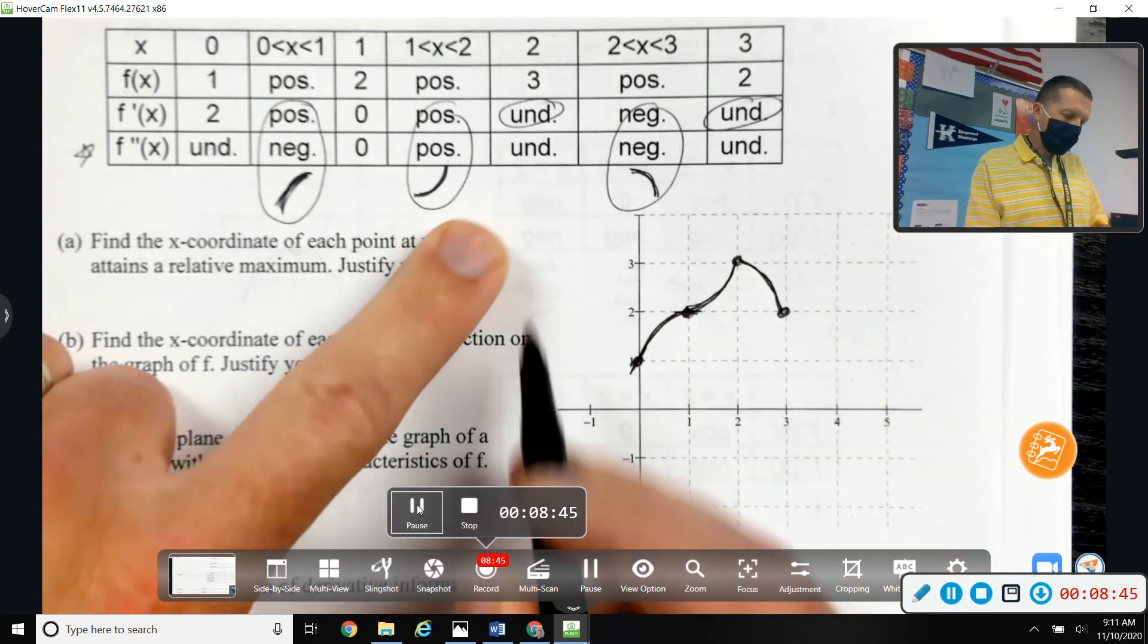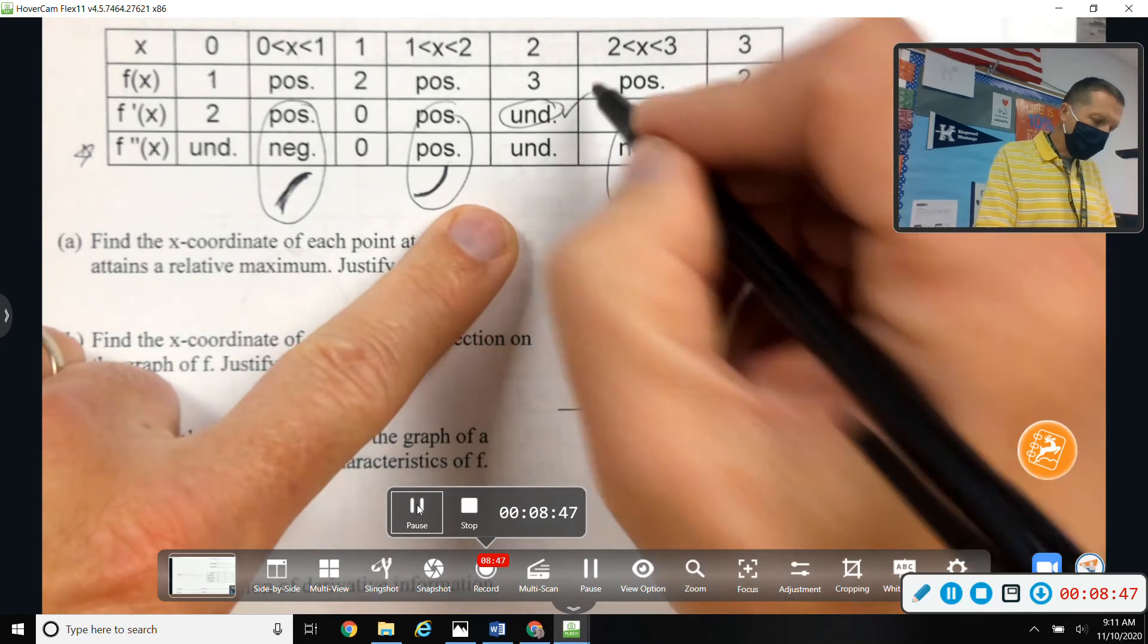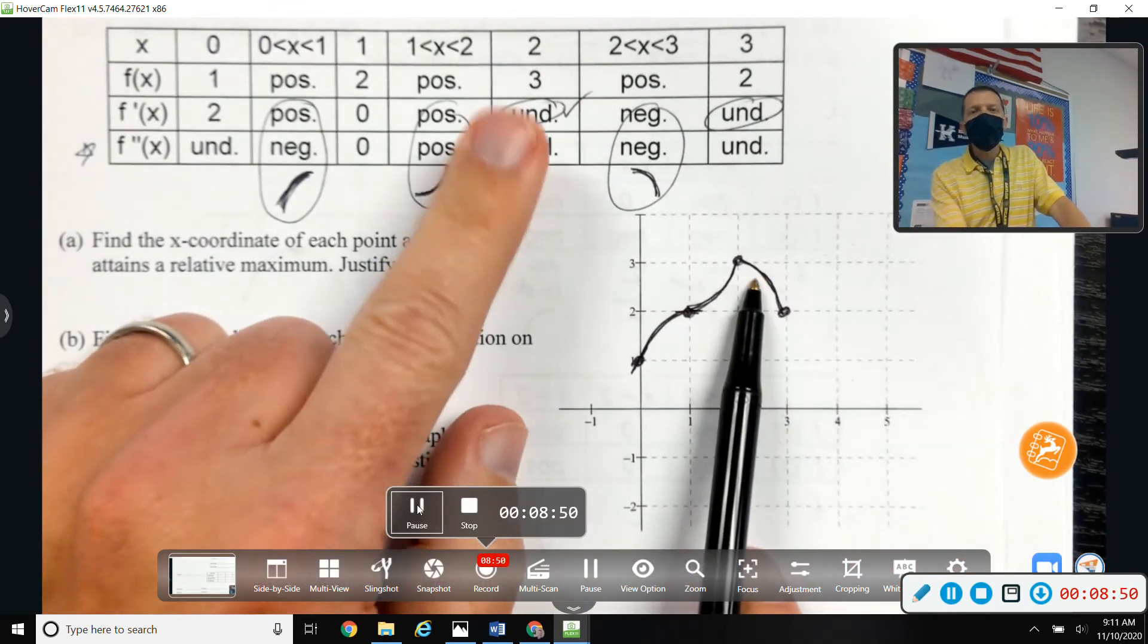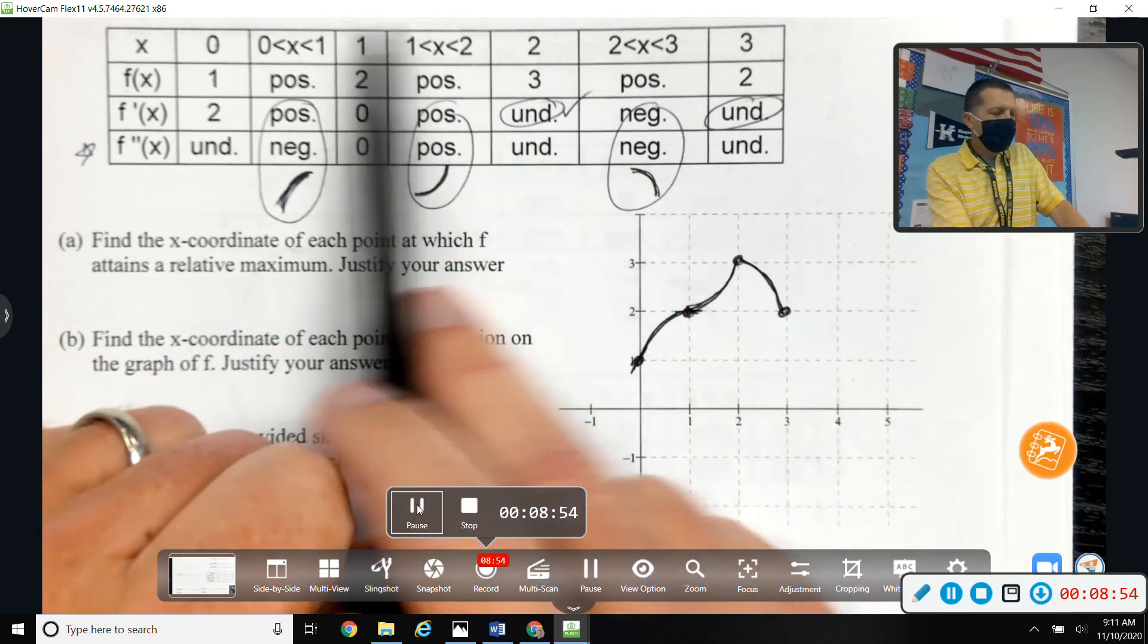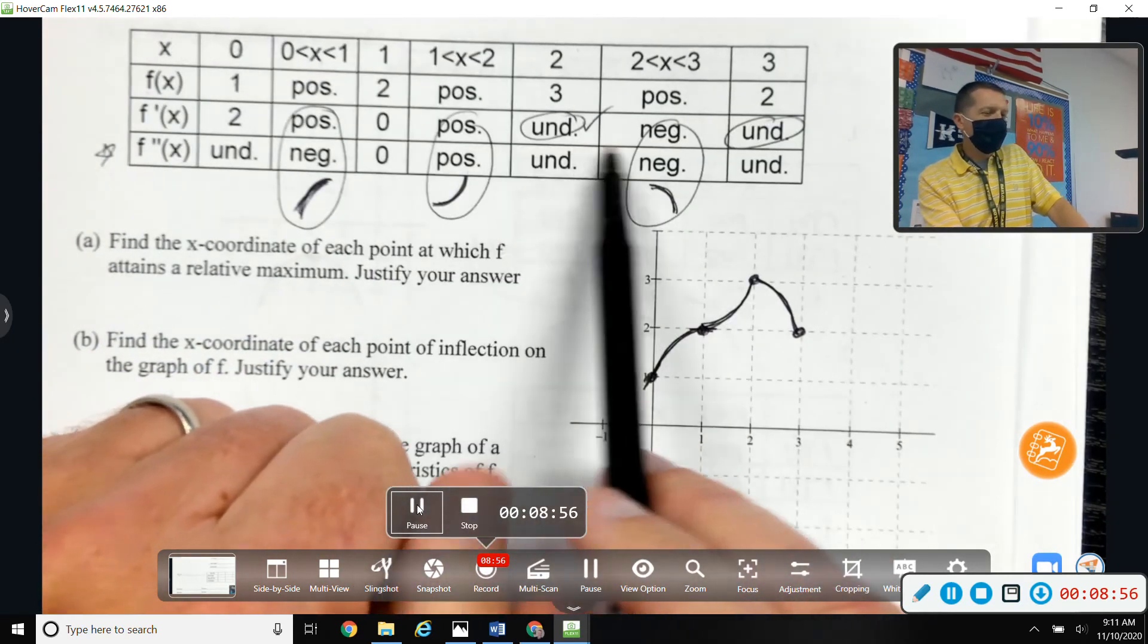And I think that checks out with the second derivative being undefined at 2, because there's a cusp there. So there's sort of some extra information in here, or repetitive information that we can use to check what we've got.